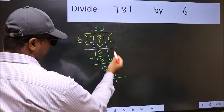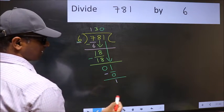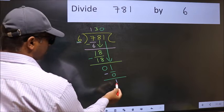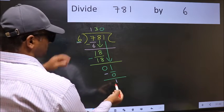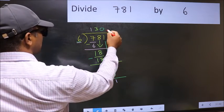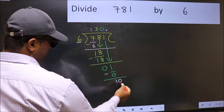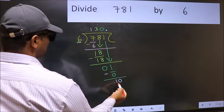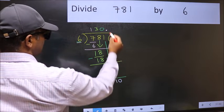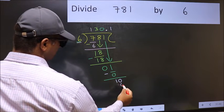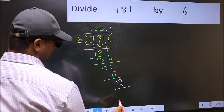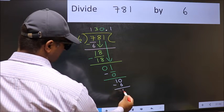Over here, we did not bring any number down, and 1 is smaller than 6. So now you can put a dot and take 0. So we have 10. A number close to 10 in the 6 table is 6 once, which is 6. Now you subtract: 10 minus 6 equals 4.